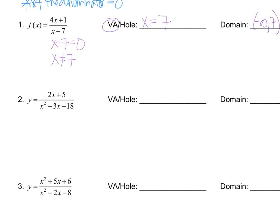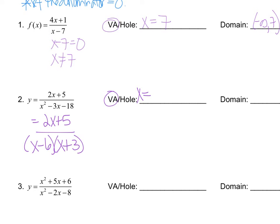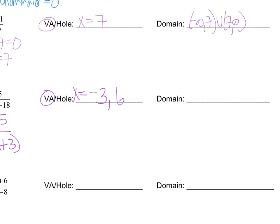In example two, we have to do some factoring. The denominator factors to x minus six times x plus three. Nothing cancels, so we still don't have a hole, but we actually do have two VAs — at negative three and at six. When we find the domain, we have to break twice: negative infinity to negative three, union, negative three to six, union, six to positive infinity.